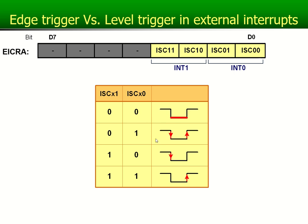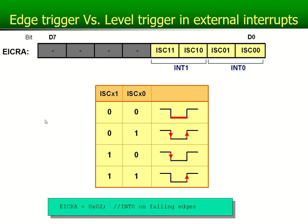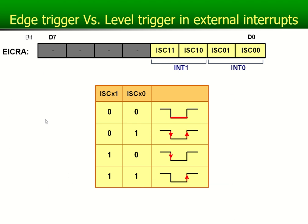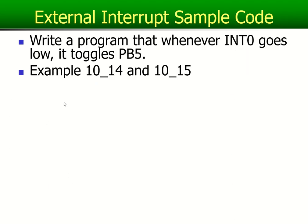In the previous video I showed you can do edge trigger versus level trigger on external interrupt. So let's go to the next slide. In another video, I will do the examples from the book, example 14 and example 15, where it says write a program that whenever interrupt zero goes low, it toggles PB5.